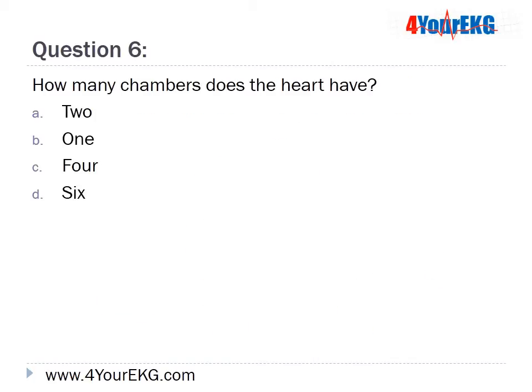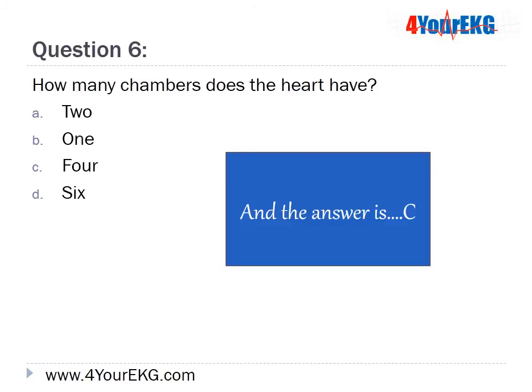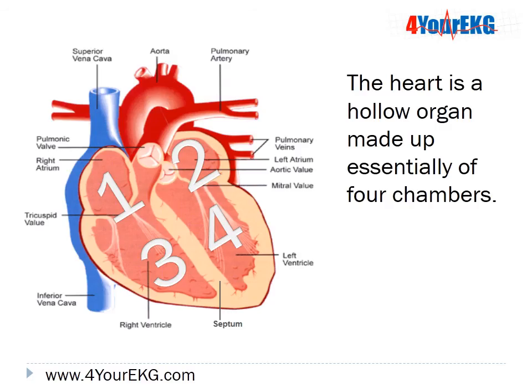Question 6: How many chambers does the heart have? A. 2, B. 1, C. 4, or D. 6. The answer is C — 4. The heart is a hollow organ made up of essentially four chambers.